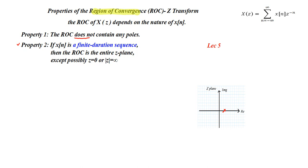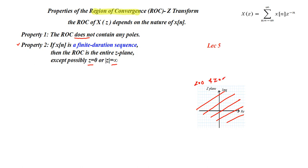The second property states that if x(n) is a finite duration sequence, the ROC is the entire z-plane. However, there can be exceptions: either z equals 0 or z equals infinity, or both, may be excluded from the ROC.